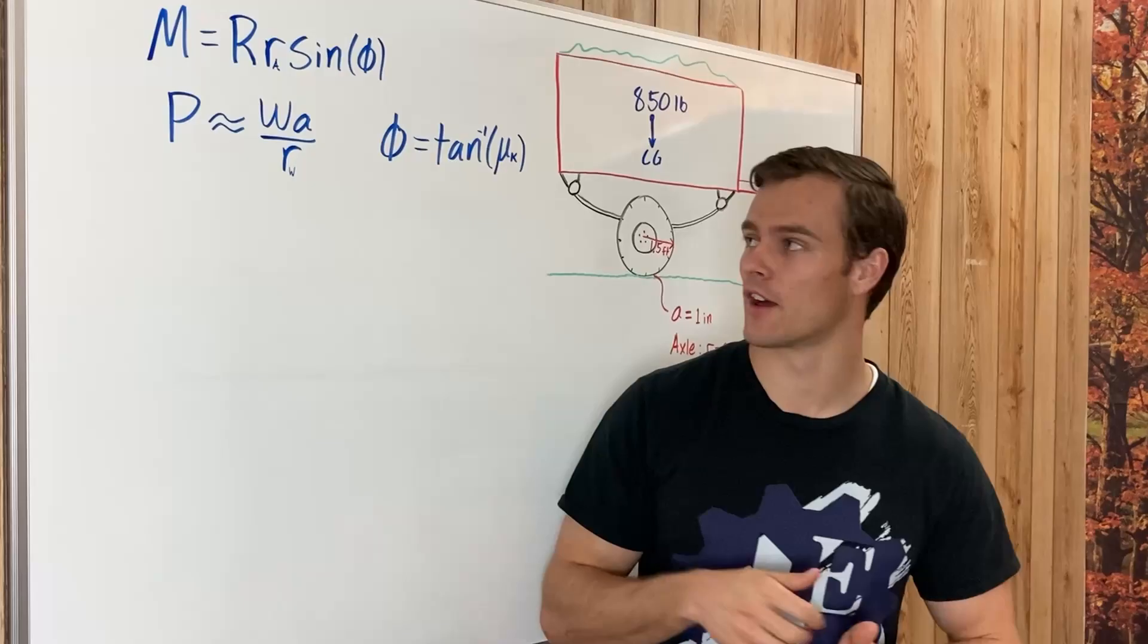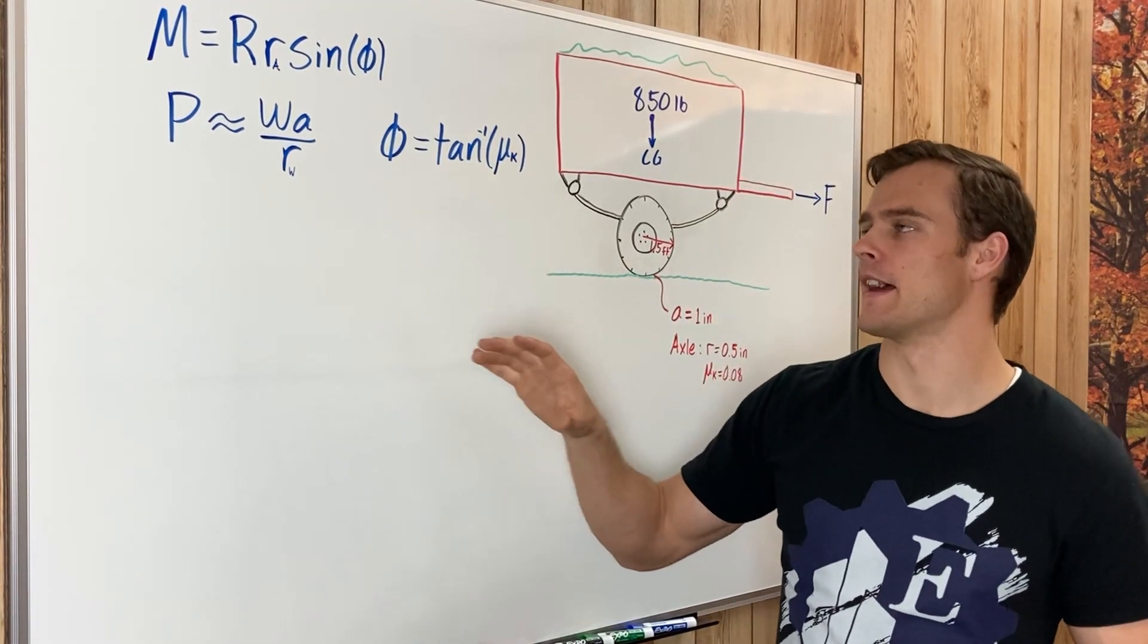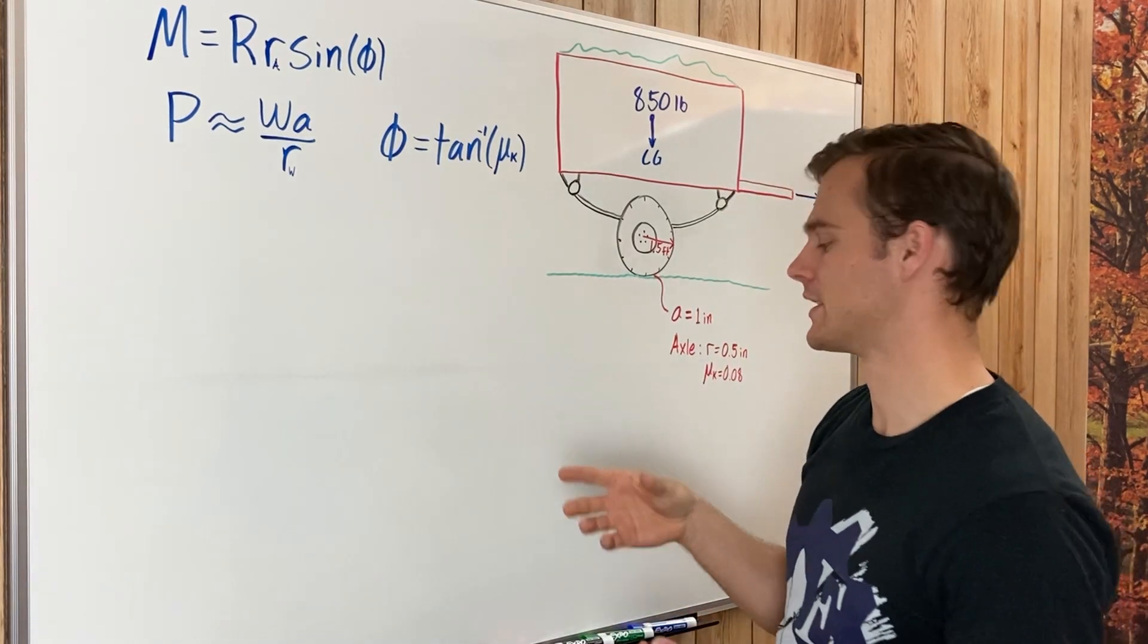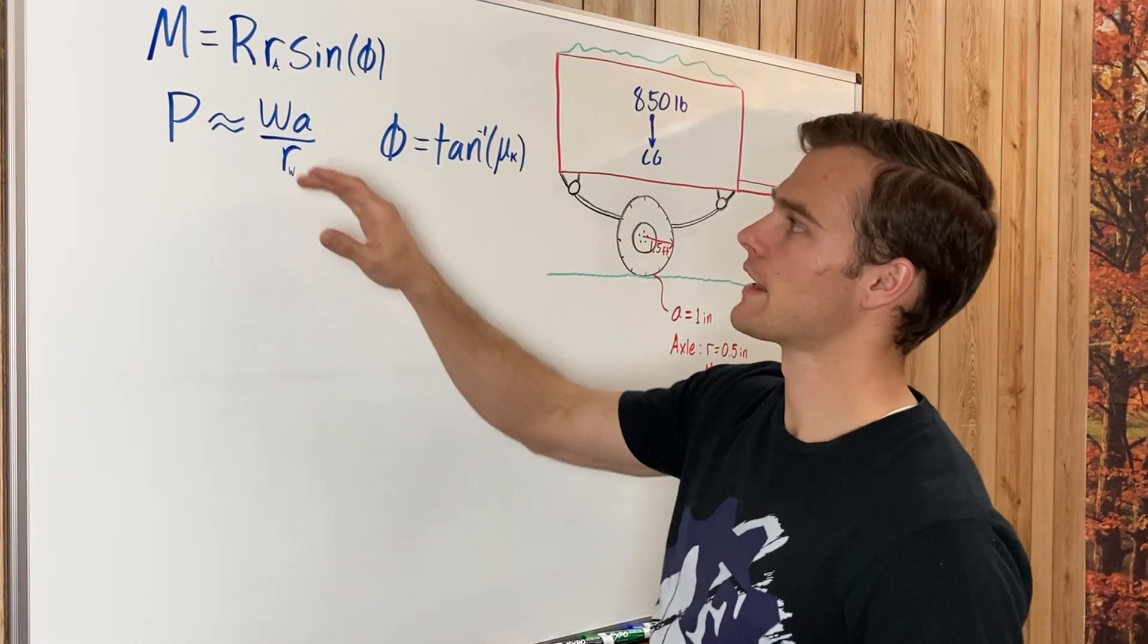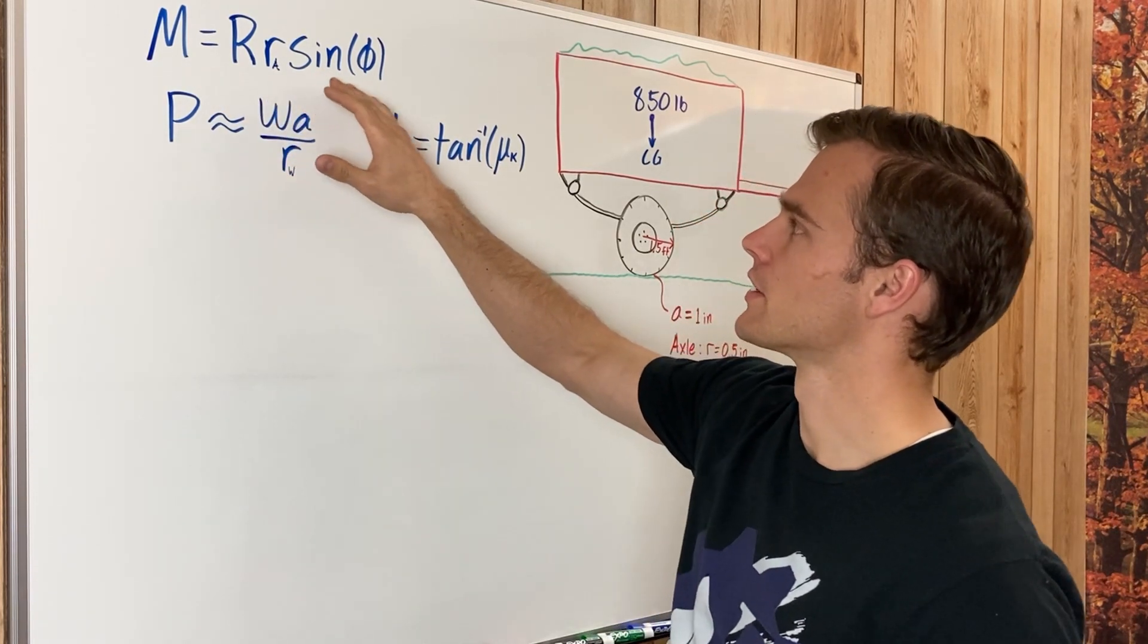The first thing we need to do is understand these equations and what all their variables mean, and identify all those knowns and unknowns. So here our M equals R little r sine of phi.